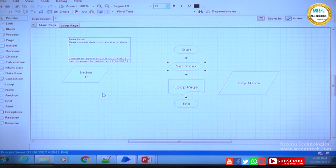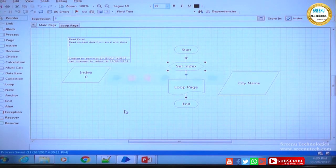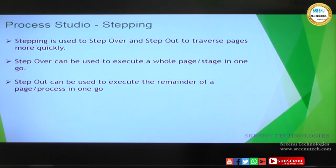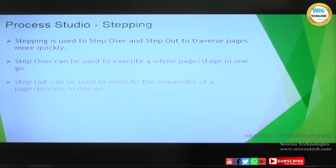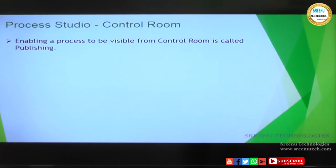Hope this is very useful for you, and during development it will be very handy. Now we have seen how stepping is useful for debugging and what are the 3 modes available: Step, Step Over, and Step Out. Now we will go to the next topic which is Control Room — we will see how a process which we have developed is visible from a control room.